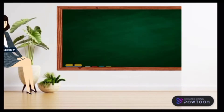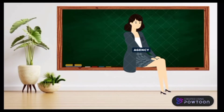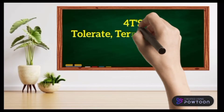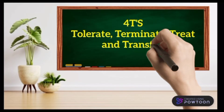To manage risk, we use four main control options — and that's the 4Ts: Tolerate, Terminate, Treat, and Transfer.